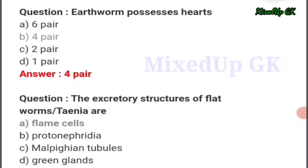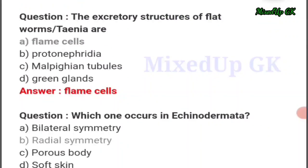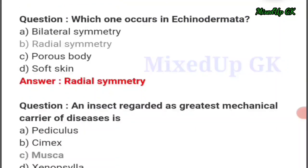Next important question: earthworm possesses hearts — how many pairs? The answer should be option number B: four pairs. Next question: excretory structures of flatworms (Taenia) are — the answer should be option number A: flame cells.